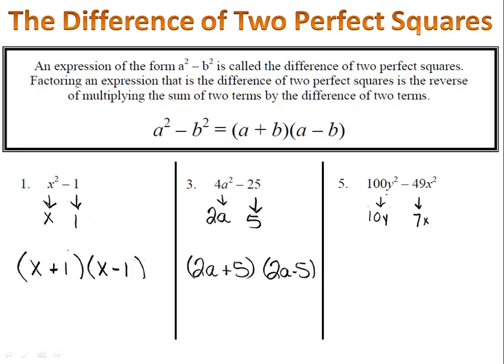How about example 5? I think you get the hang of it by now. We notice they're both perfect squares, 100y squared, that's 10y, 49x squared, its square root is 7x. And then we write our parentheses with our 10y plus 7x and 10y minus 7x.